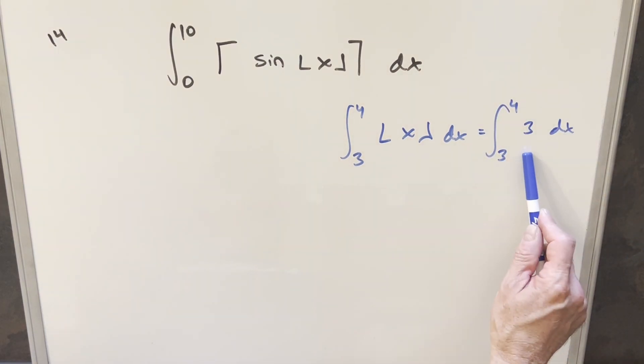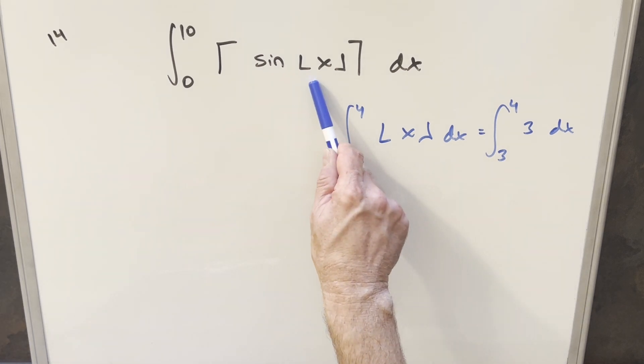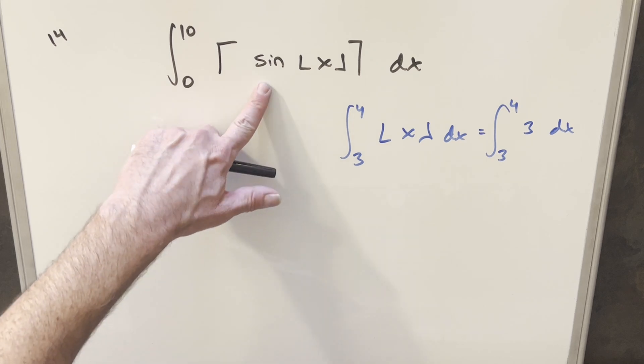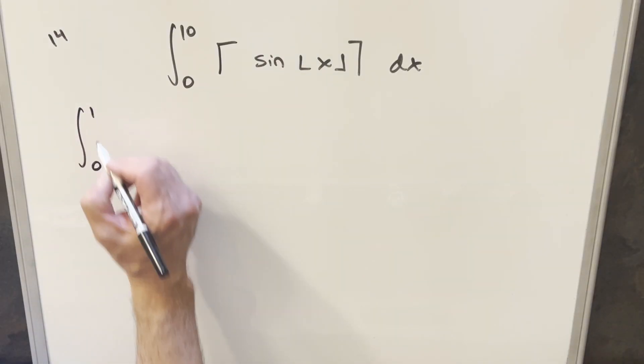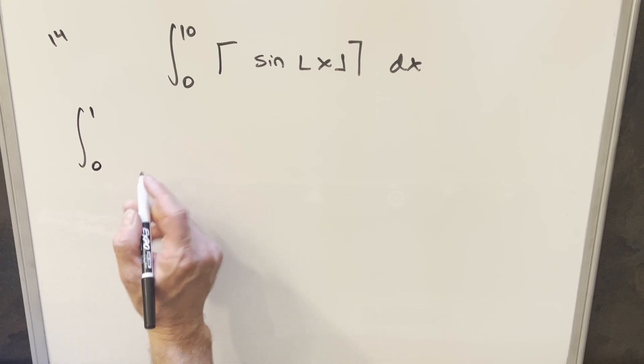So in this case, it just transforms the integral into a constant value, and the floor and the ceiling is always going to return an integer value, but with the sine, it's going to get a little more complicated. So to get this started, let's actually start breaking it up on these integer bounds.